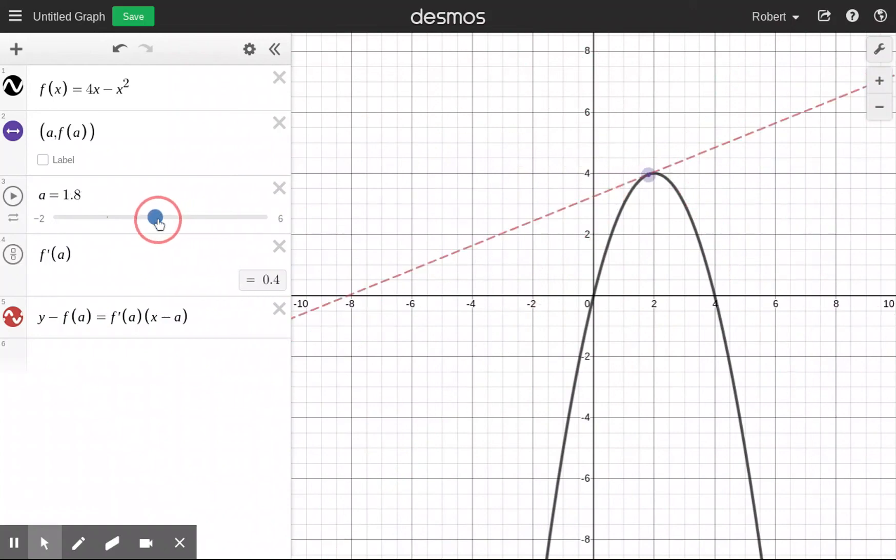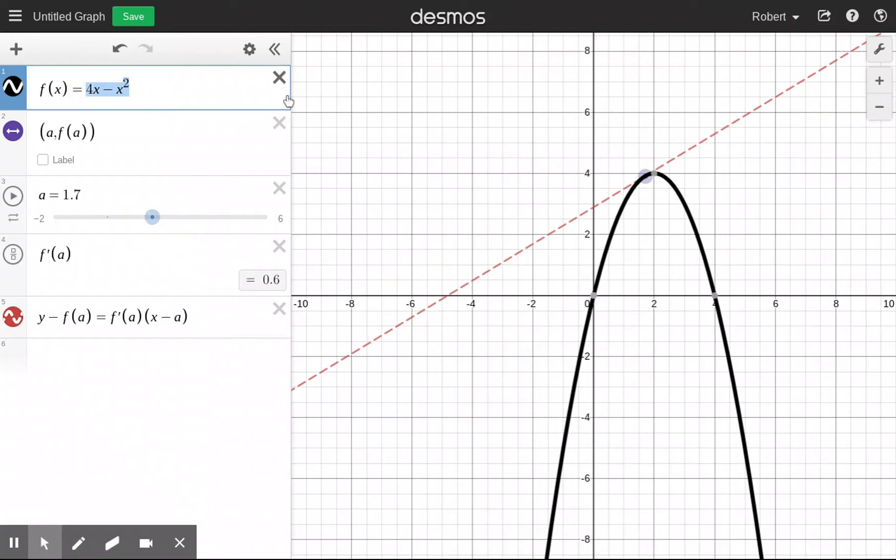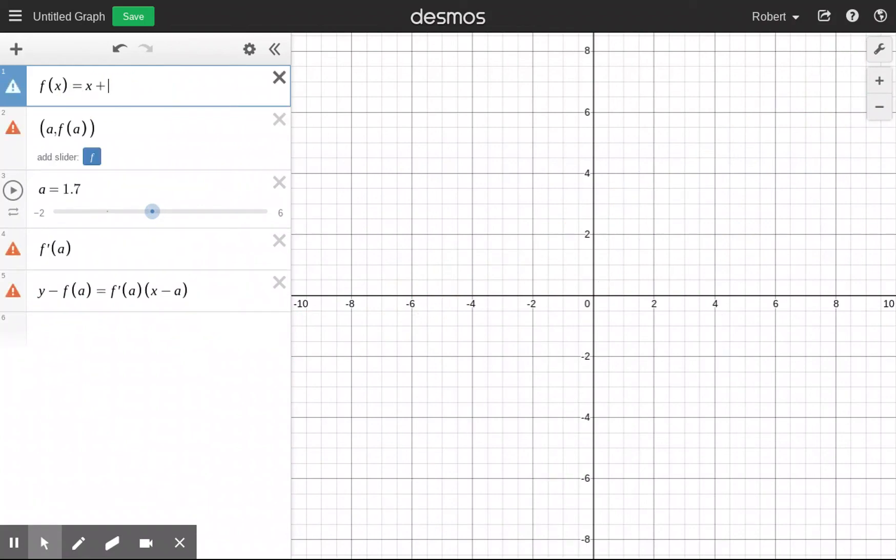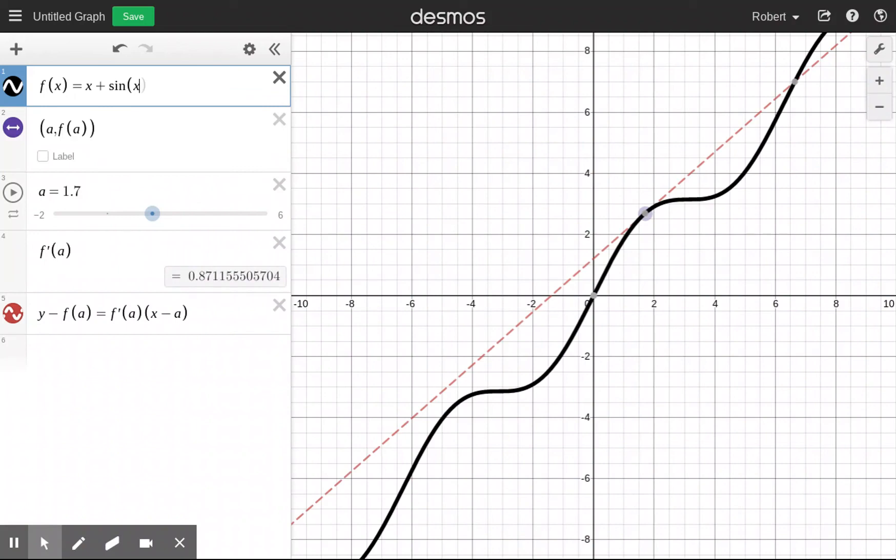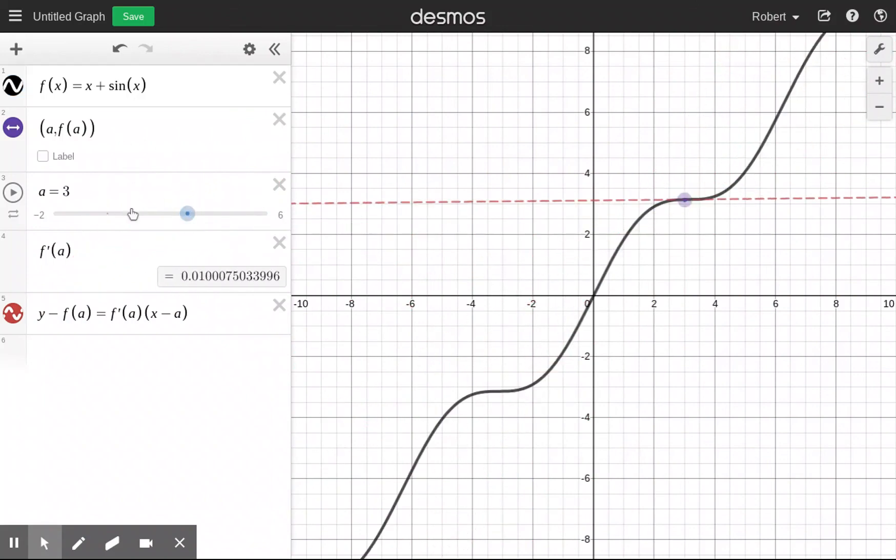All right, and this actually works no matter what your function is. Like if I go over here and change the function to something like x plus, let's do some trig here, sine of x. I got a new formula, but everything else is the same. And I can track that tangent line as it moves through. So everything you see here in the second, third, fourth, and fifth cells, that would be, stays the same all the time. I would just need to change the formula here.